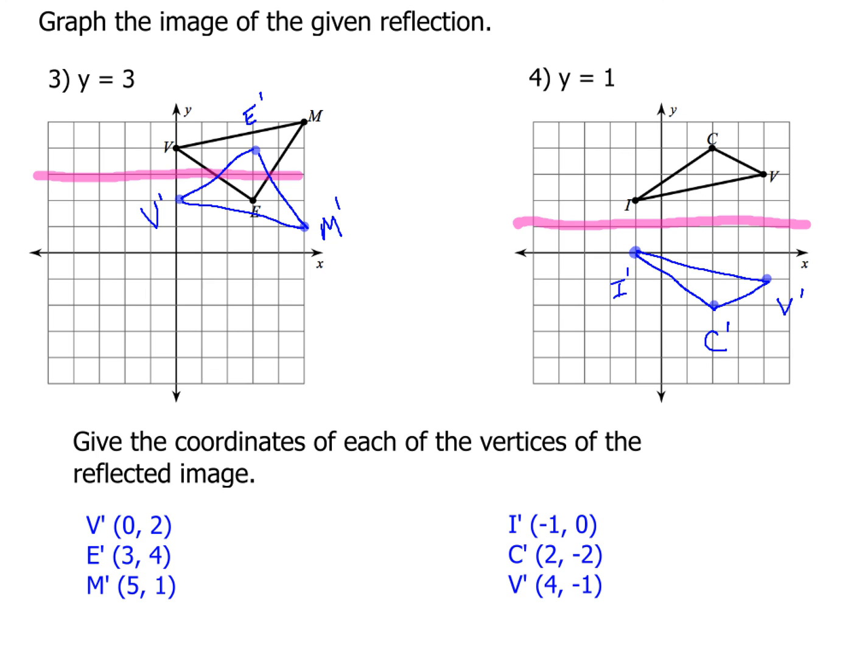So how did you do? Hopefully for number three, you came up with the coordinates (0, 2) for v prime, (3, 4) for e prime, and (5, 1) for m prime. And then your drawing matches a drawing that's there on your screen on the left.